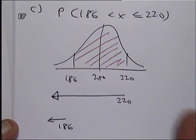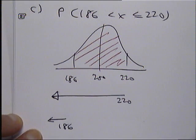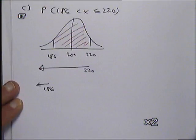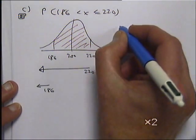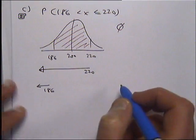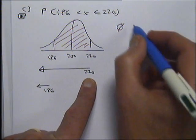So what we're going to do is we're going to do the area, the probability less than 220, take away the probability it's less than 186. But we've got to change into Z numbers. Because they're less than, I'm going to go straight into phi notation. And I'm going to start with the big number, the 220.